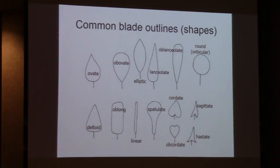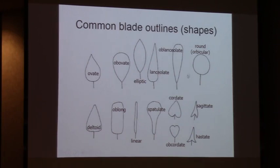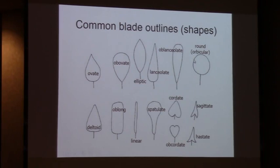Blade outlines or shapes are very important. Ovate is egg-shaped; obovate - you flip it. Elliptic is broadest at the middle. Ovate is broadest in the basal region. Lanceolate is like ovate but longer and narrower - greater length-to-width ratio. You flip the blade and go from lanceolate to oblanceolate. Why do we use these Latin-derived terms? Because there's no English equivalent that's short. If there is a shorter English equivalent, we use it - 'round' has fewer letters than 'orbicular,' so we can say round. We also have deltoid, oblong, linear, and so forth.